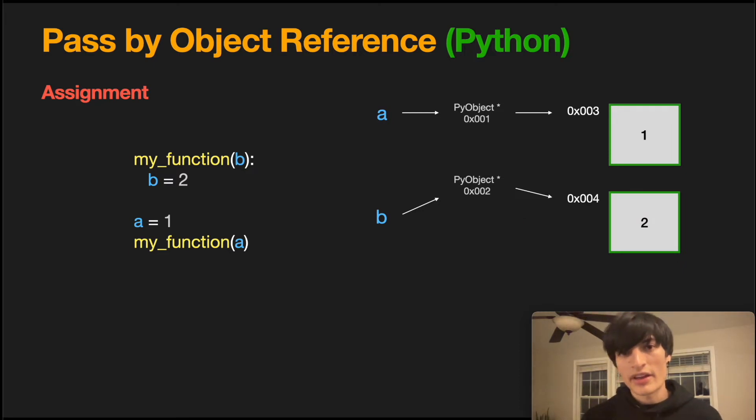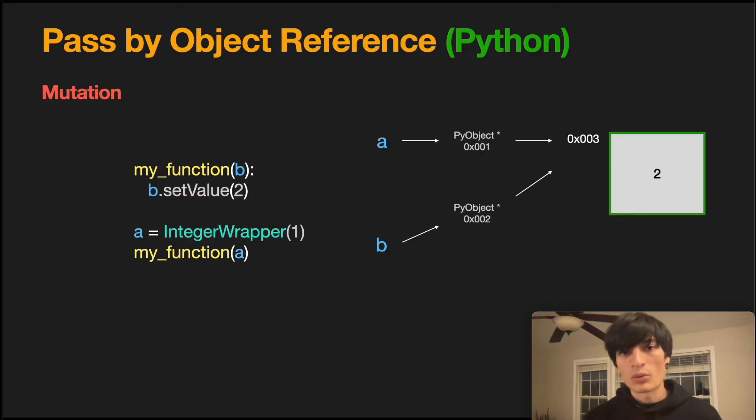Regardless to pass-by-value or pass-by-reference, assignment acts very much like pass-by-value. However, when we move on to mutations, we get behavior that reflects a pass-by-reference language. Here you can see in my function, we are mutating the value. As a result, the object pointed by b's py object pointer is changed. This change is now reflected in both b and a.